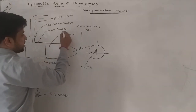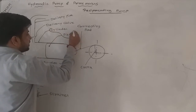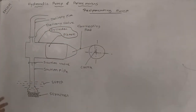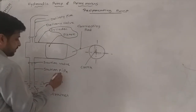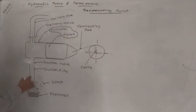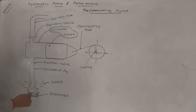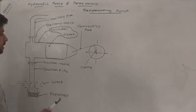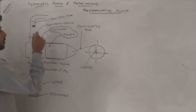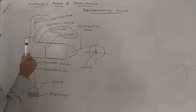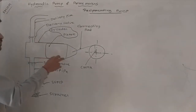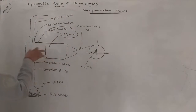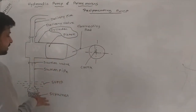The reciprocating pump uses a piston and cylinder. The construction parts include a suction pipe, suction valve, delivery valve, and delivery pipe. The piston cylinder is driven by a crank and connecting rod, which creates reciprocating motion.